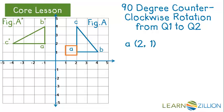A is 2, 1. A prime is negative 1, 2. See if you can find a pattern. The x and y values definitely change places. Do you see anything else?